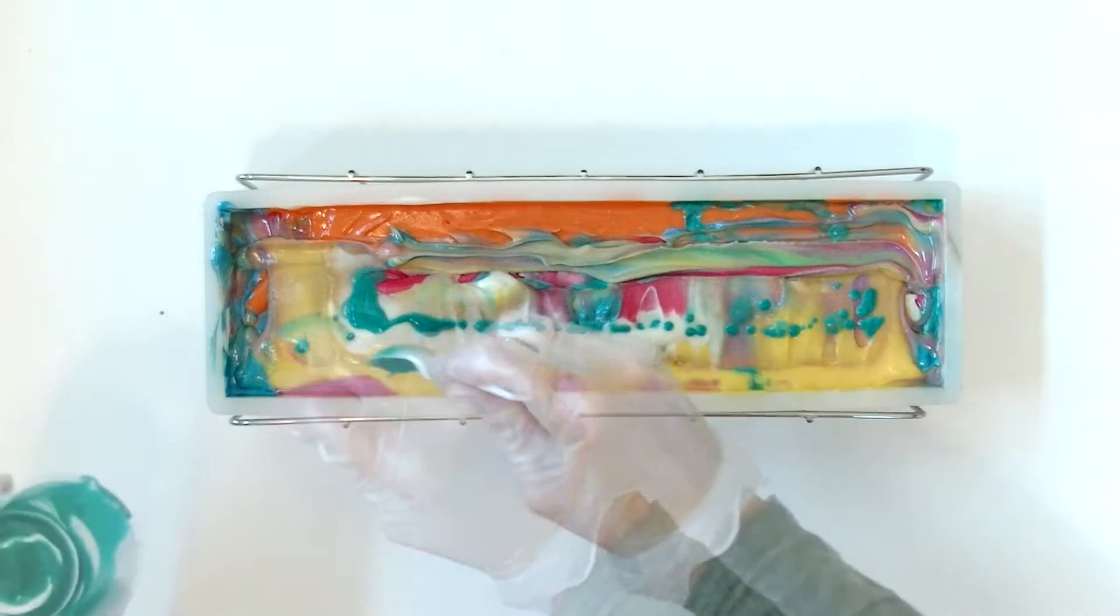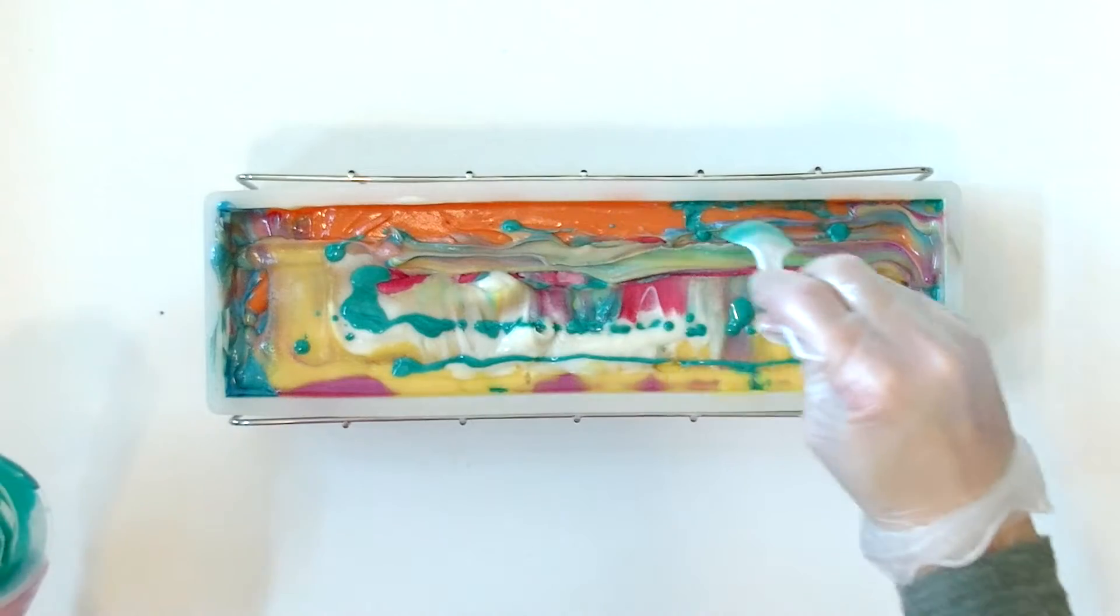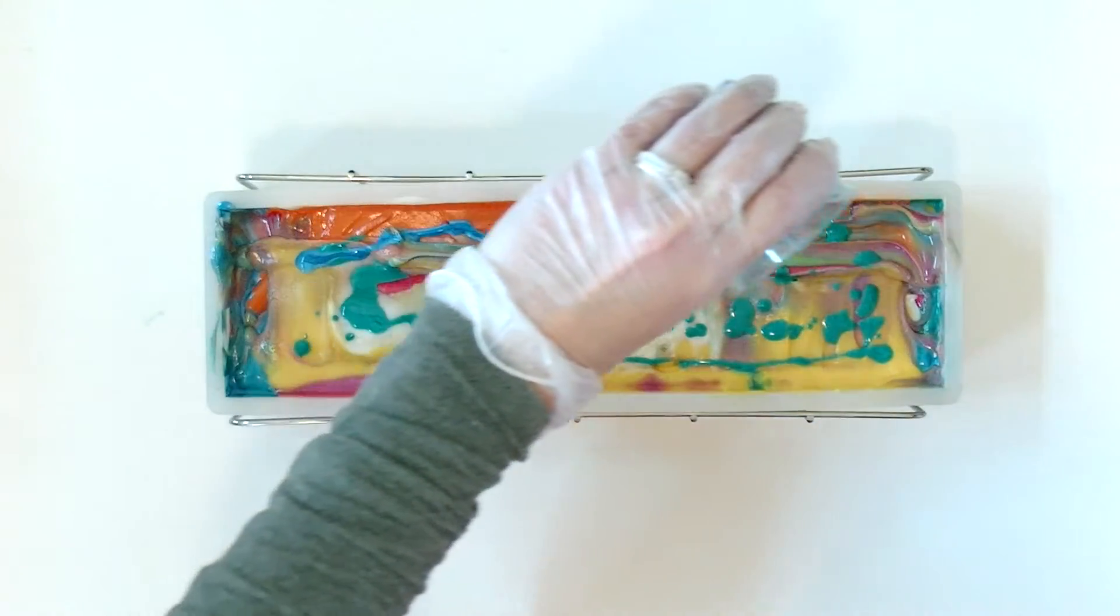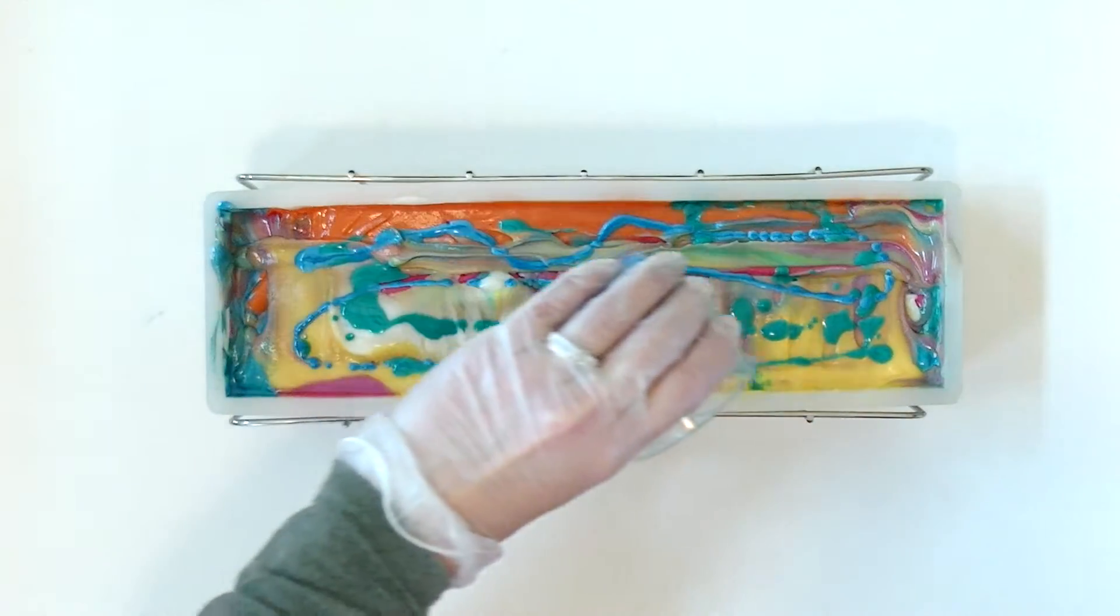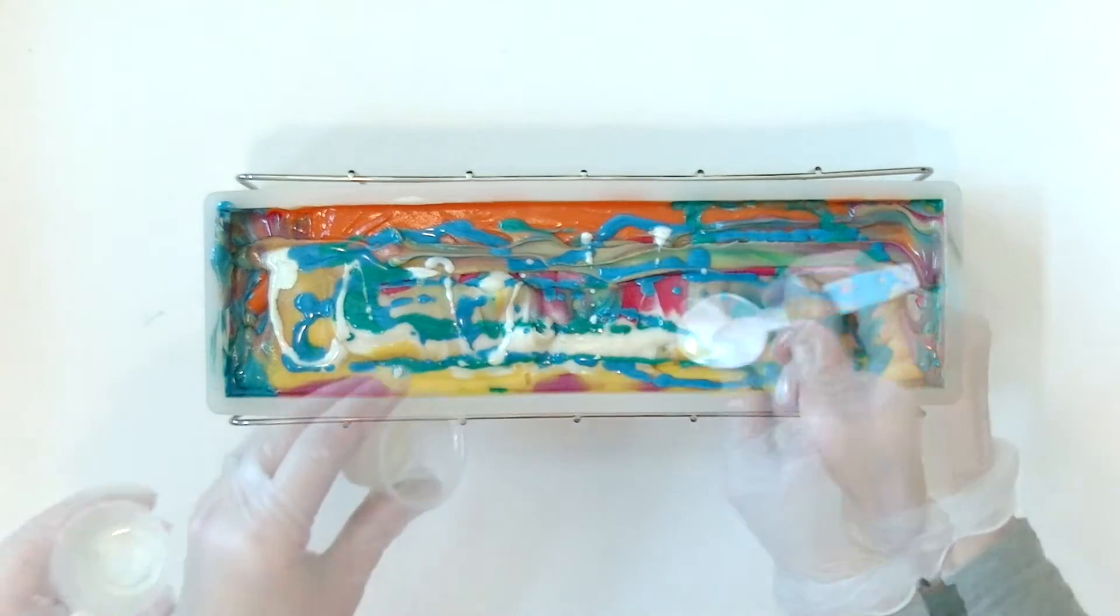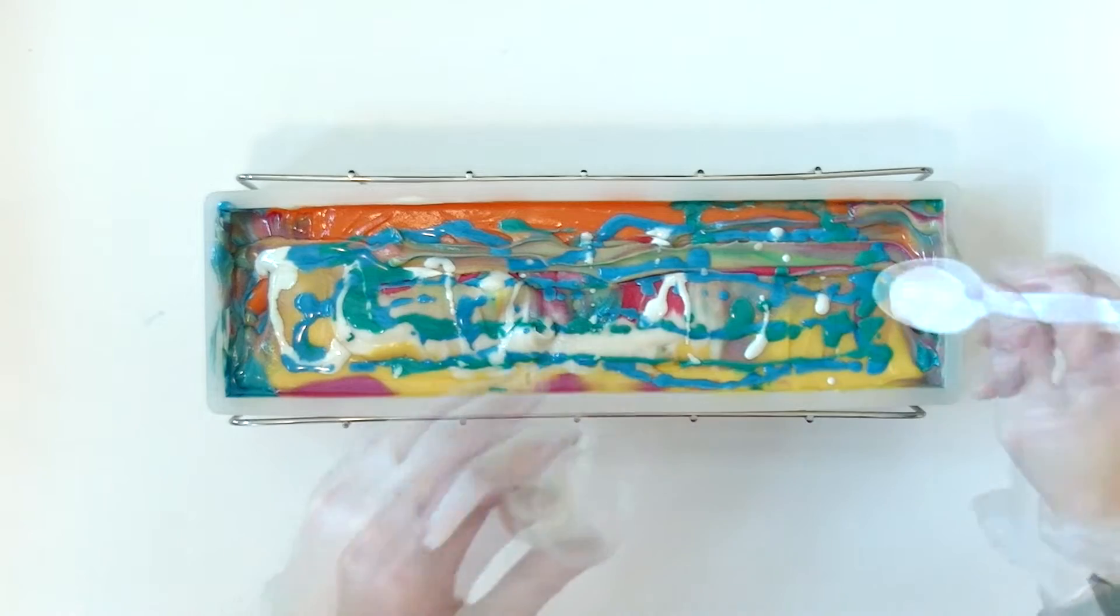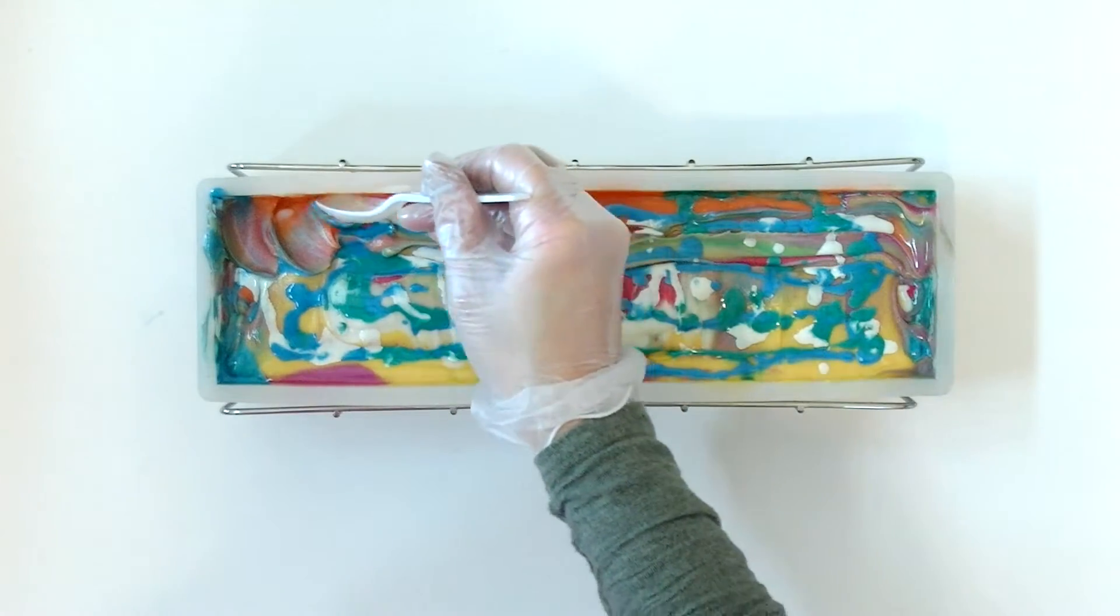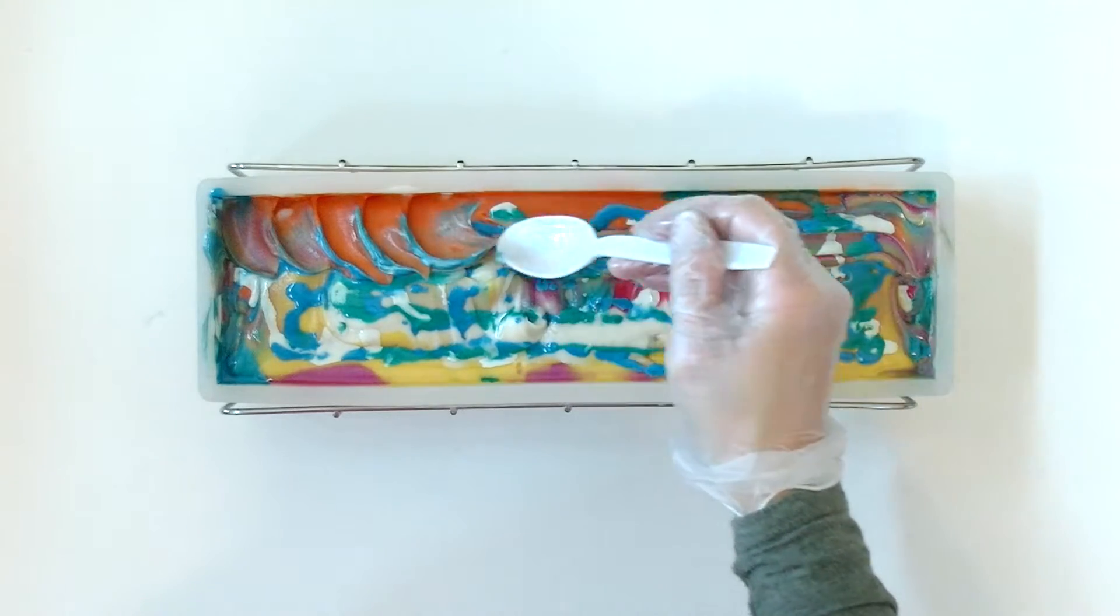The rest of the mica in oil goes on top. The white is an interference mica with a green shimmer. I'm testing it out. I texture the top carefully so I don't muddy the colors too much.